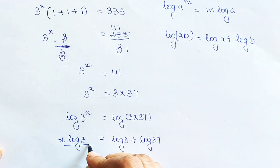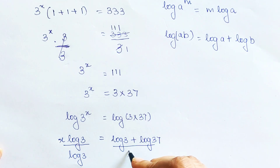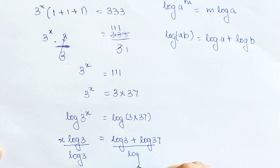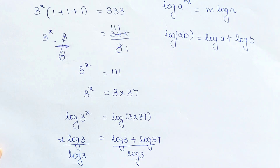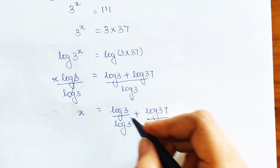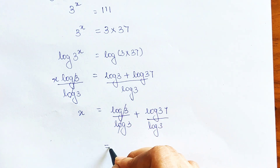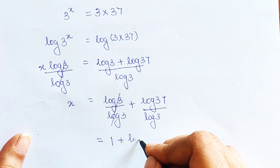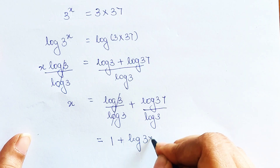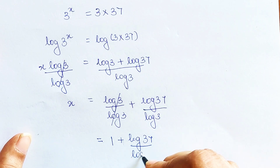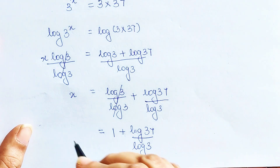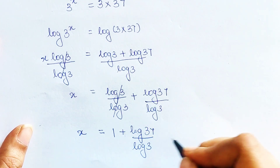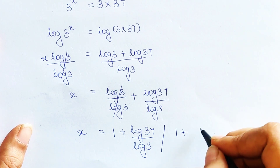So the RHS will look like log 3 plus log 37. In order to find the value of x, we divide both sides by log 3 — this will cancel — and you get x equals 1 plus log 37 upon log 3.